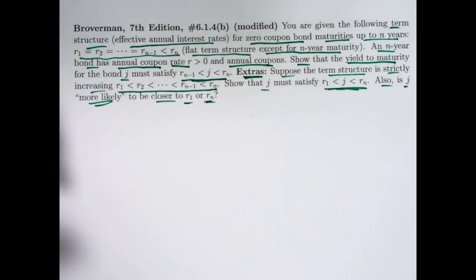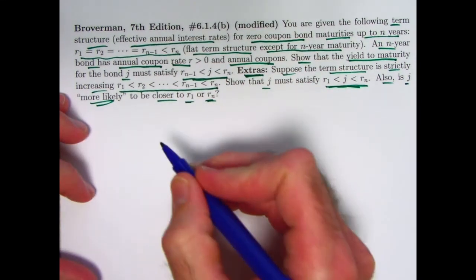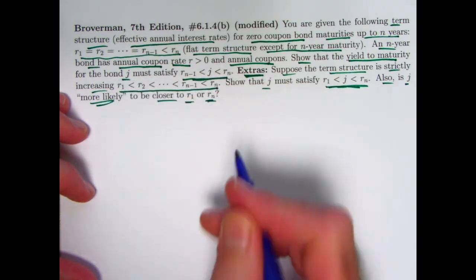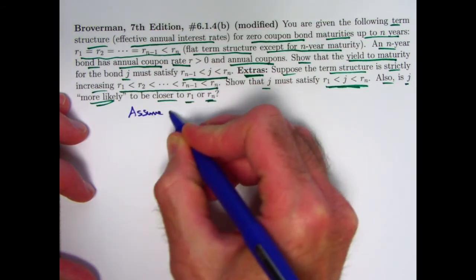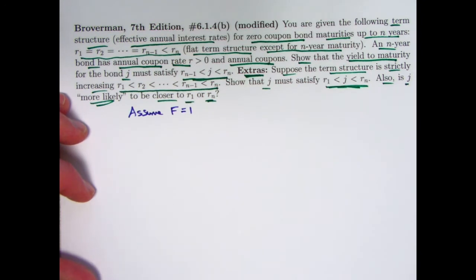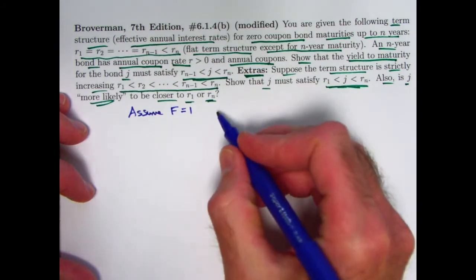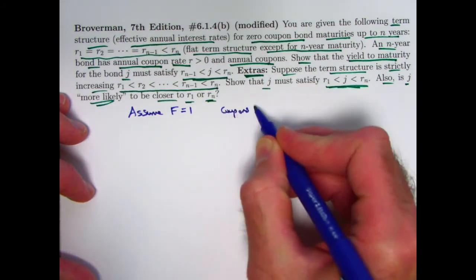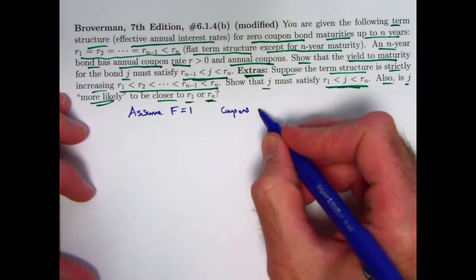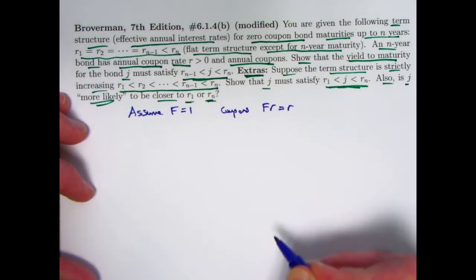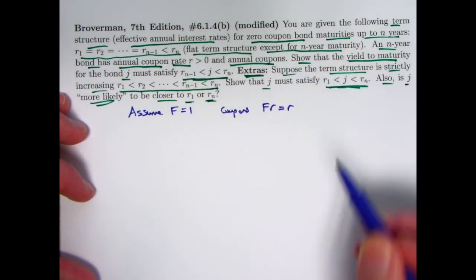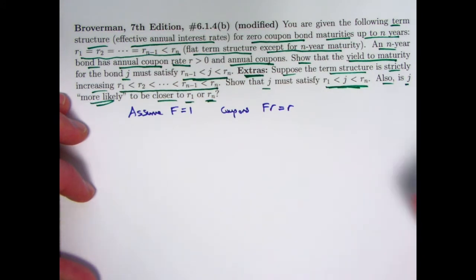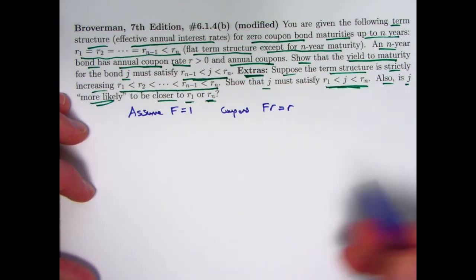So what do we have here? The bond with coupons here could be priced according to two different ways of thinking. To keep things simple, let's assume the face amount is 1 — we could assume any face amount and keep it in the equations, but let's just keep things simple. So the coupons for this bond are going to be face amount f times r, which is just r. R is the annual coupon rate with annual coupons, so r is in fact the amount of each coupon. For example, if r is 0.04, then the coupon amount would be 0.04.